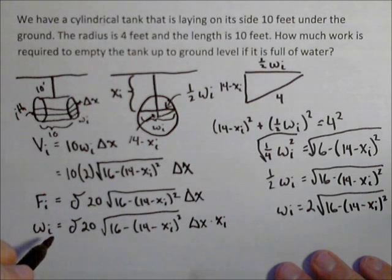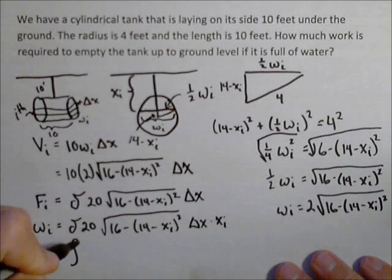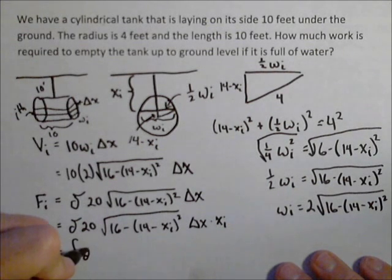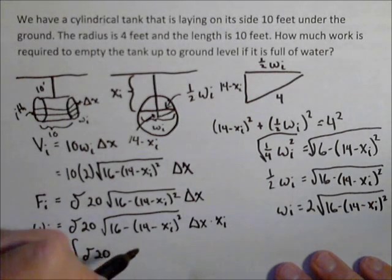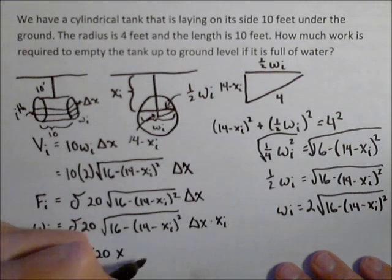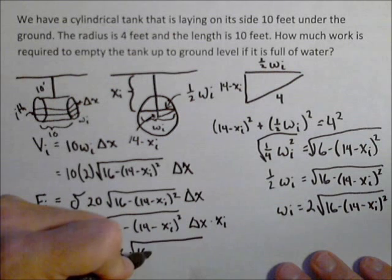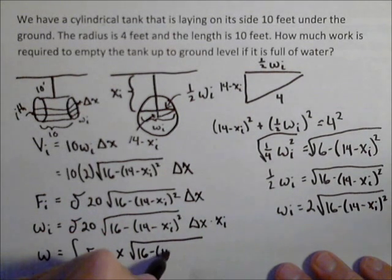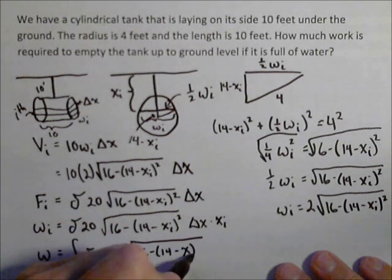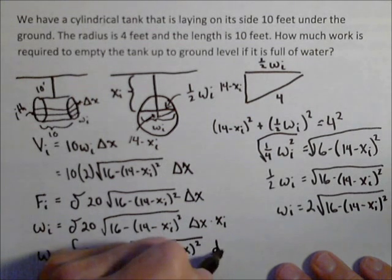So I've got work for the i-th slice. I can now set up my integral. So I've got delta and 20, those can be pulled out of the integral because they're constants. x, I dropped the sub i's because now we're continuous, we're no longer in a discrete situation. That's square root of 16 minus (14 minus x) the quantity squared, dx.